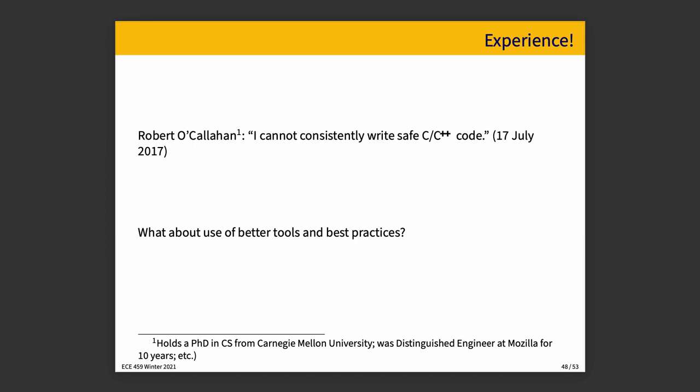Robert O'Callaghan has a PhD in computer science from Carnegie Mellon University and was a distinguished engineer at Mozilla for 10 years — eminently qualified, knowing as much as one could reasonably know about such a subject. And he says: 'I cannot consistently write safe C and C++ code,' and he said that in July of 2017.